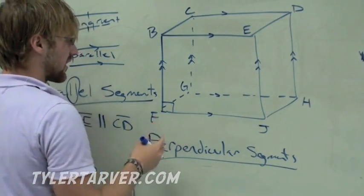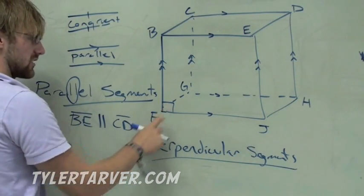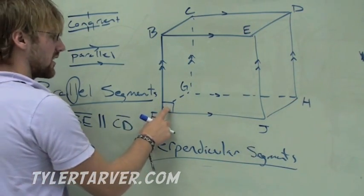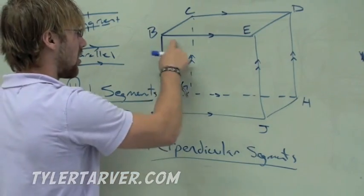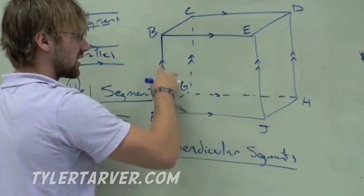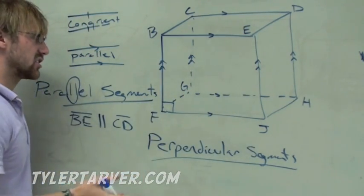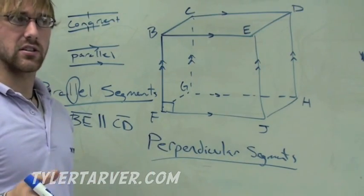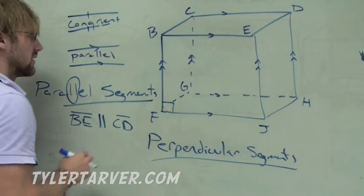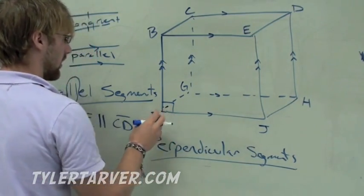Now, we signify that with that little box there. If that is a right angle, if that's 90 degrees, that means that all these are. Just because they're parallel, which we'll get to that in a later section, actually it's in this chapter. Something to look forward to. Kind of like Back to the Future 4.